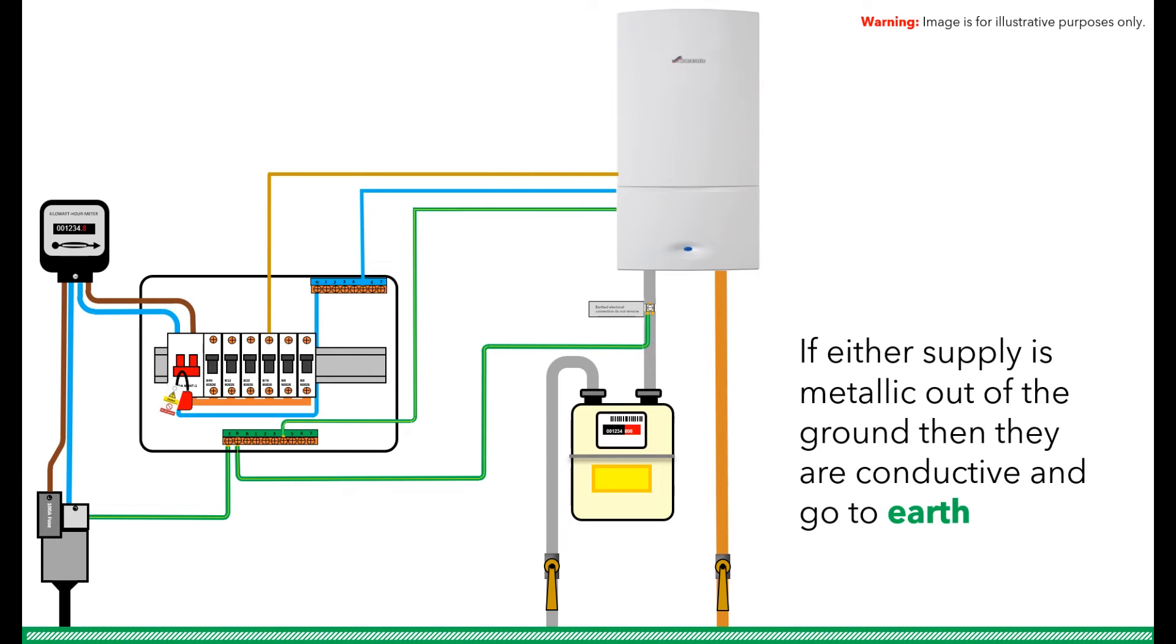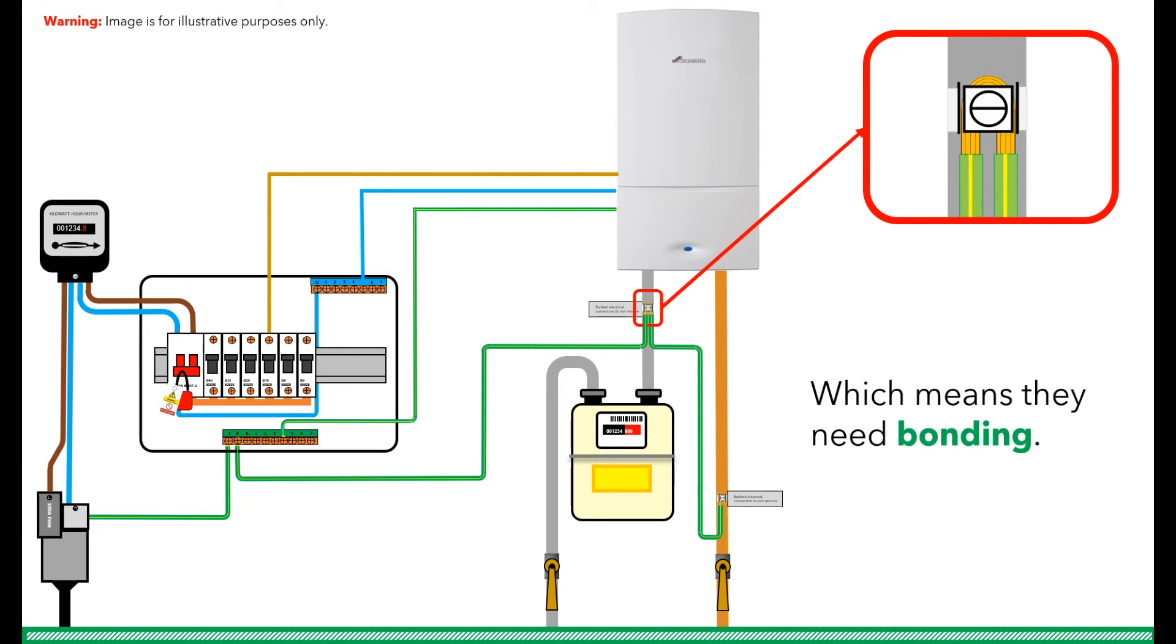You also need to consider that the boiler is also connected to the water supply. And if this supply is metallic and goes into the ground, then you basically have another earth rod that is capable of introducing a zero potential to earth.